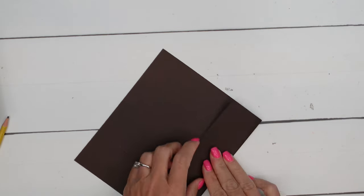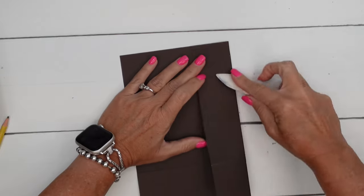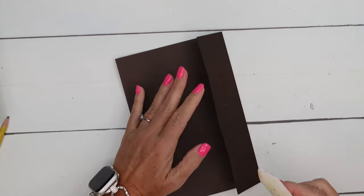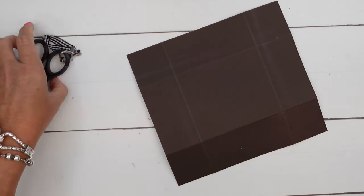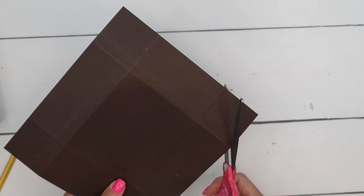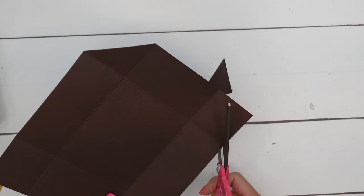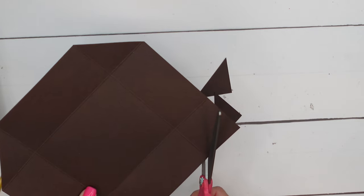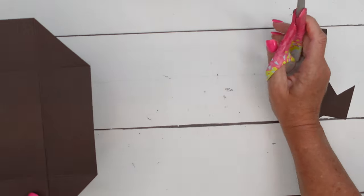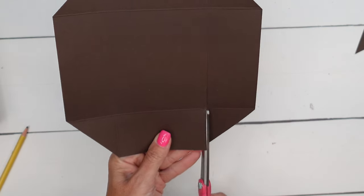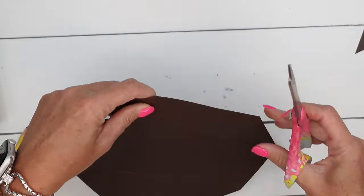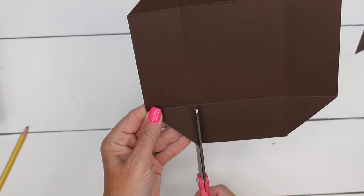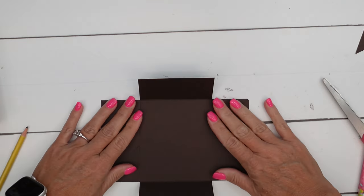You want to get your bone folder, burnish those lines really well. And then grab your scissors. And I like to cut the corners off. So I'm going to go from score line to score line on all four corners, cutting those corners off. Then I'm going to come down on the shorter side and I'm going to snip those score lines, stopping at that horizontal score line.